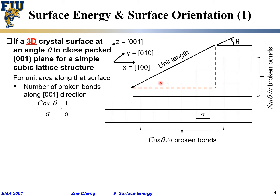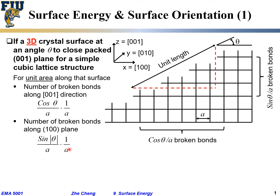Similarly, the bond pointing horizontally in the [1,0,0] direction also got broken. The number of bonds pointing along the [1,0,0] direction — horizontal is our [1,0,0] — those bonds pointing horizontally all got broken. From here to here, if the surface is unit length, the distance in the x-direction is sine(theta). So the number of bonds broken in that direction is |sine(theta)|/a, times 1/a.